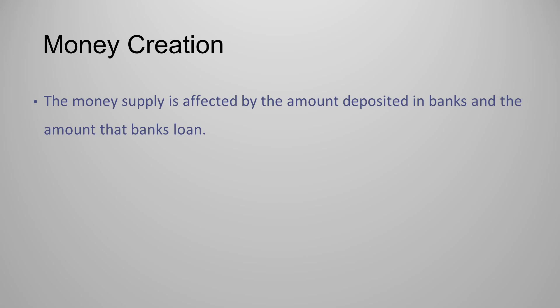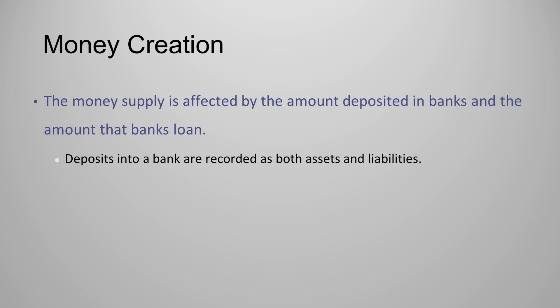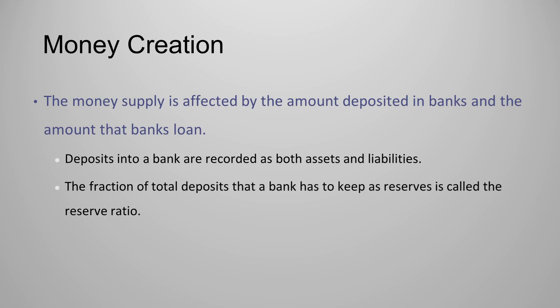The money supply is affected by the amount deposited in banks and the amount that banks loan out. Deposits into a bank are recorded as both assets and liabilities. The fraction of total deposits that a bank must keep as reserves is called the reserve ratio. Loans become an asset to the bank.